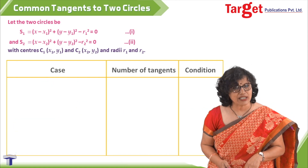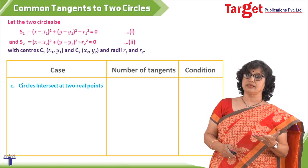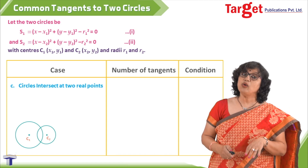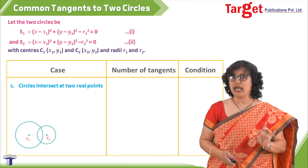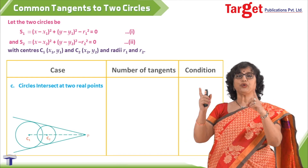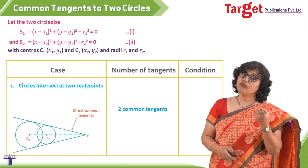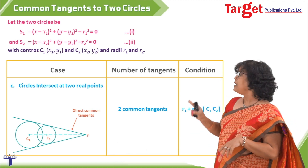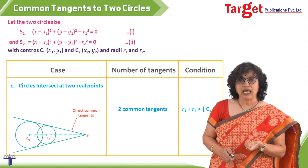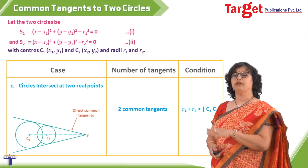The next case is circles intersect at two points. Here the transverse tangent is not a possibility. The only possibility is drawing two tangents from an outside point p — these are our direct common tangents. So the number of tangents is two. The condition is that distance c1c2 is smaller than r1 plus r2, which is easy to see from the figure.